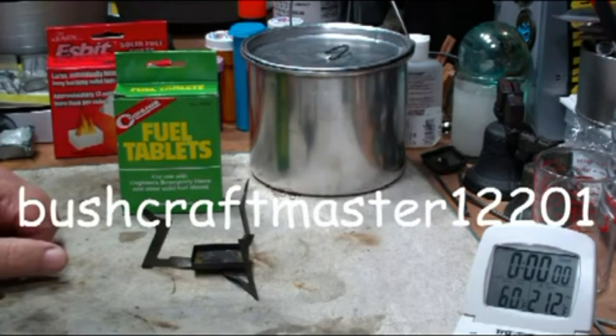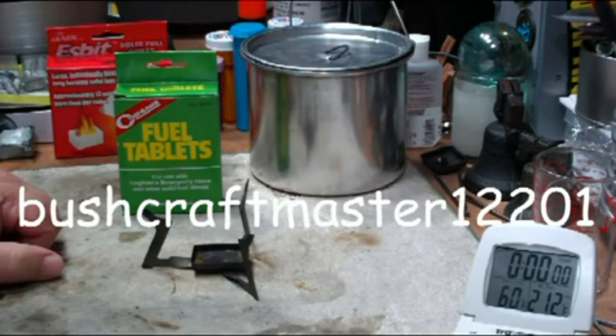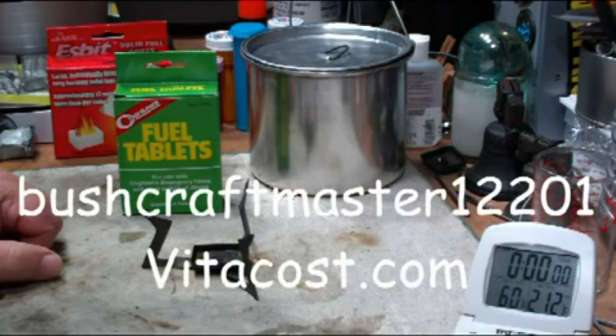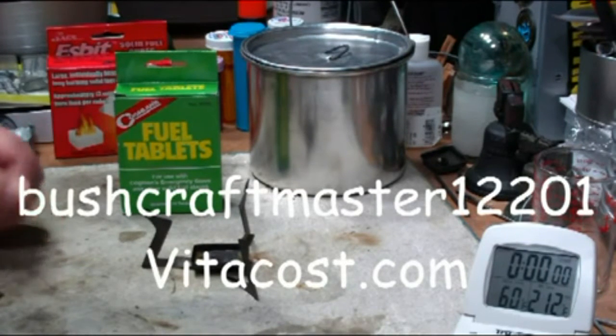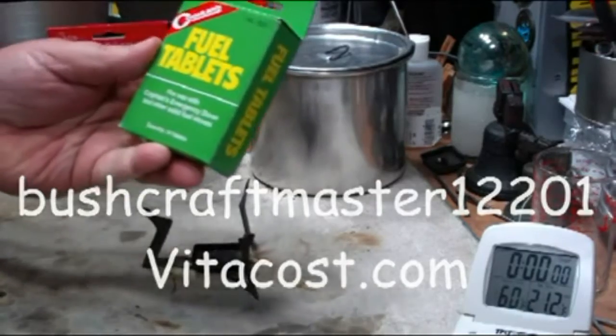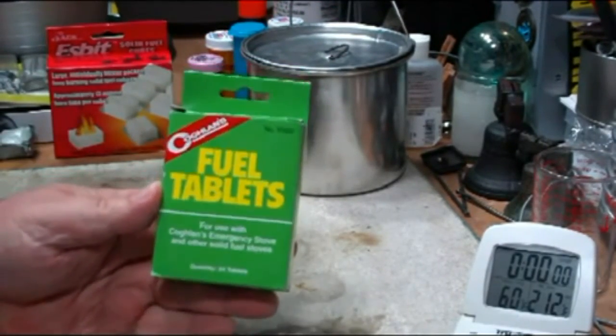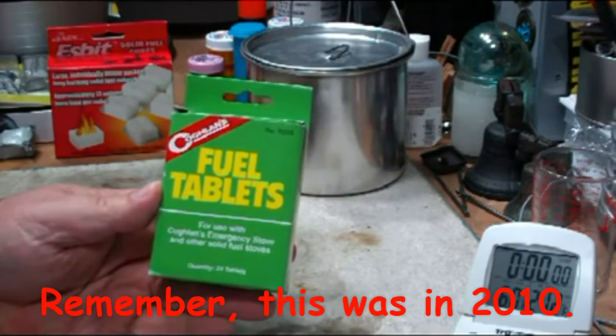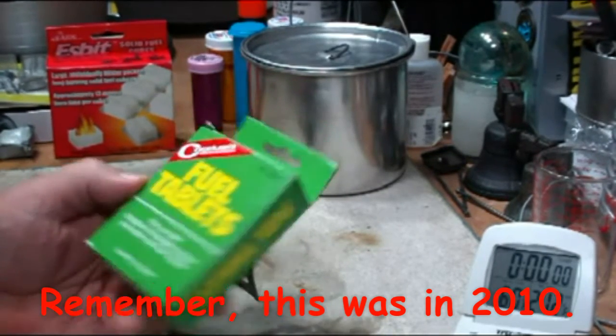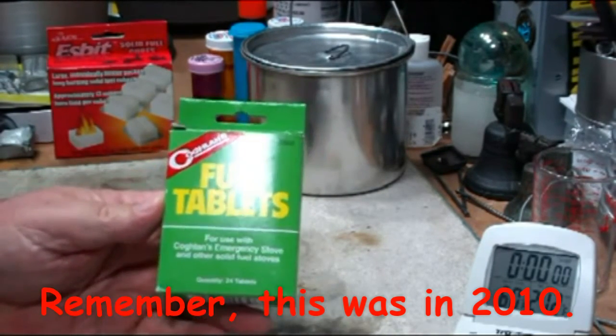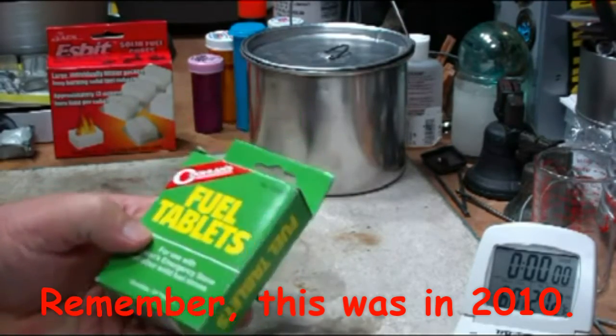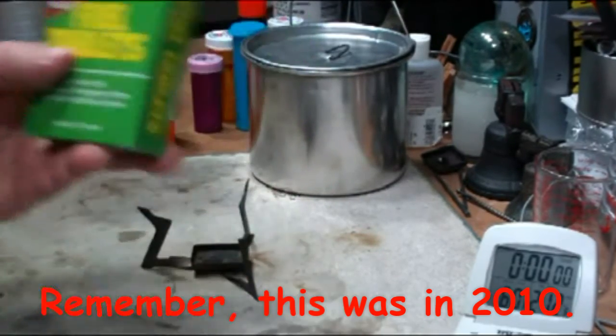But then last week, Bushcraftmaster12201 told me about a place on the internet called vitacost.com. I'll put a link to it in my info here. That was selling them for reduced price. So checking it out, I found out that they were indeed. They're selling a box of 24 for 99 cents instead of the normal $3.29 list price. So with that I bought five boxes to give them a try.